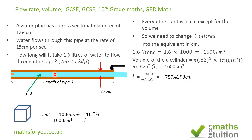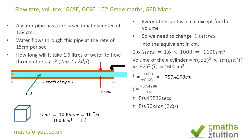Since the particle travels at 15 centimeters per second, the time is 757.4298 ÷ 15 = 50.49532 seconds. Rounded to 2 decimal places as required, t = 50.50 seconds. I hope that all made sense — thank you for watching and bye bye.